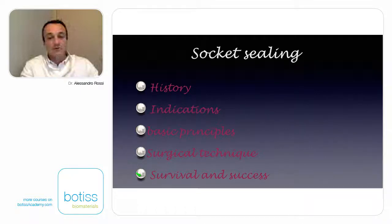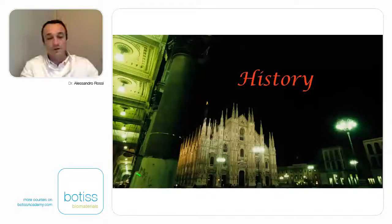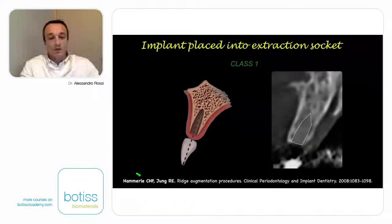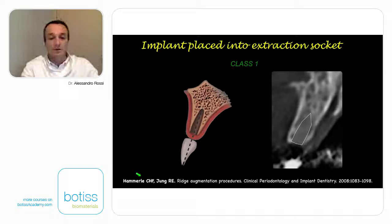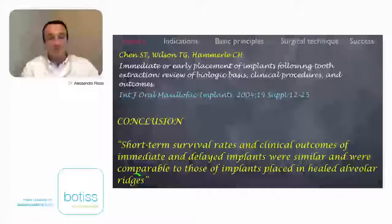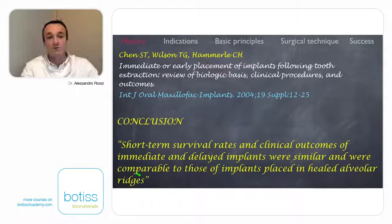Starting from the history, if we look at the literature from at least 20 years ago, we can't find any publication regarding socket sealing — only publications regarding implants placed into extraction sockets. So in those years, what we made normally, and what was also suggested, for example in this publication, was to insert an implant where we remove a tooth.